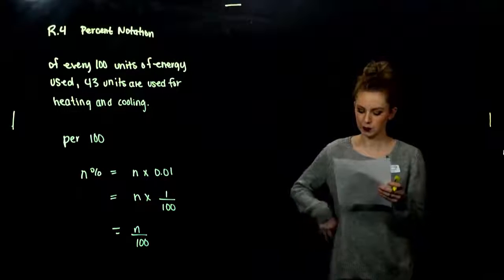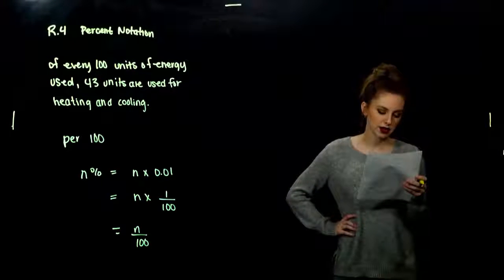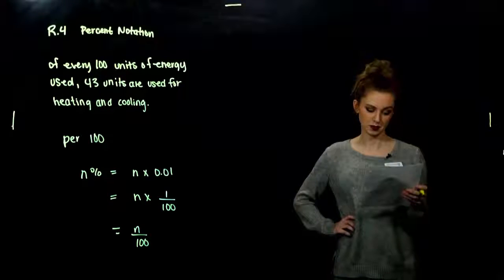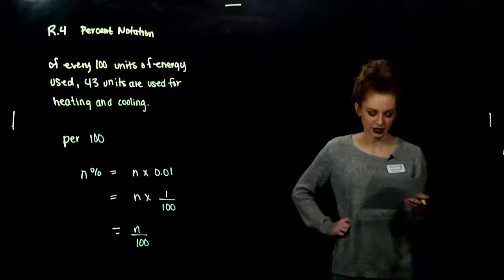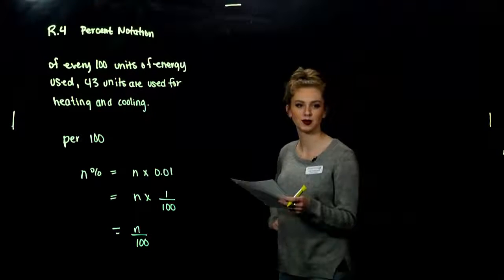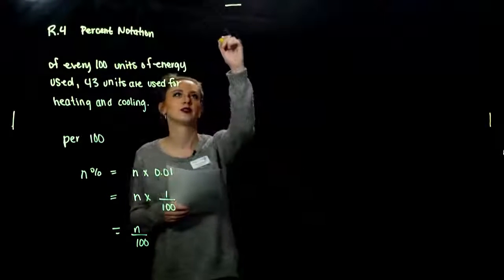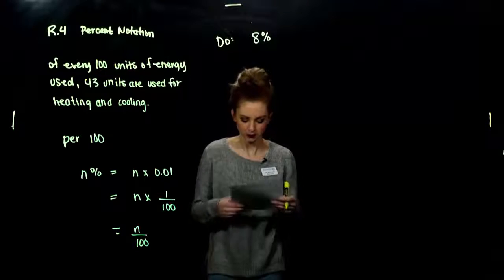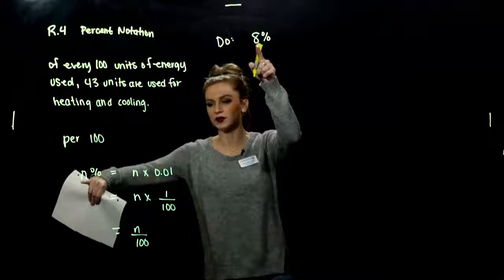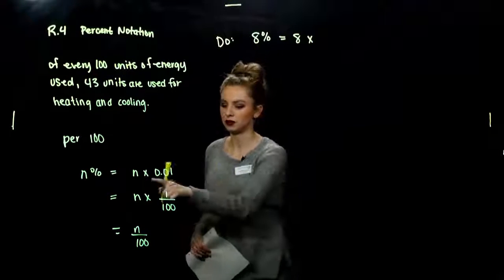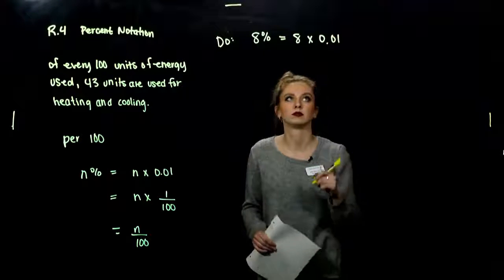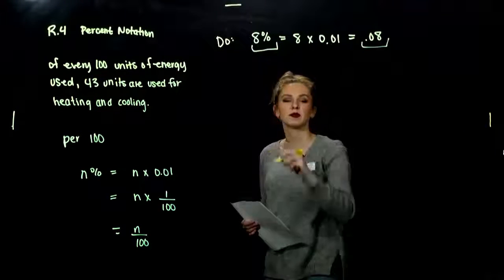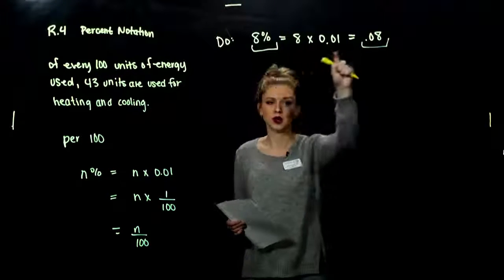The U.S. Department of Energy has determined that, on average, 8% of residential energy use is for electronics. We want to convert 8% to decimal notation. Using that first form: 8 times 0.01, per 100 units. What do I get? 0.08. They represent the same thing, but different language, and we use them in different contexts. We usually talk in terms of percentages because we know how to conceptualize those.